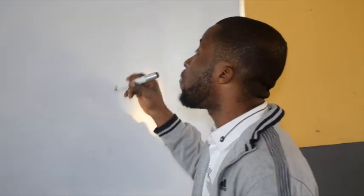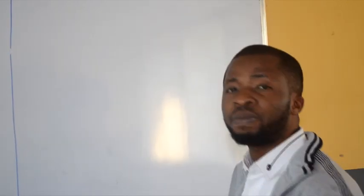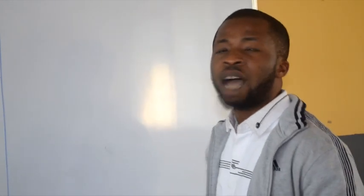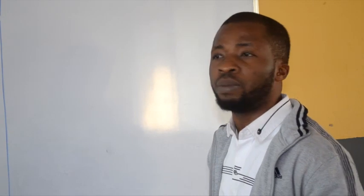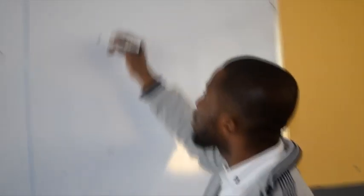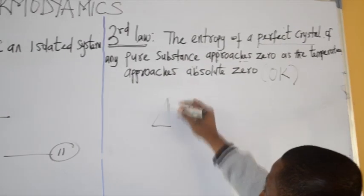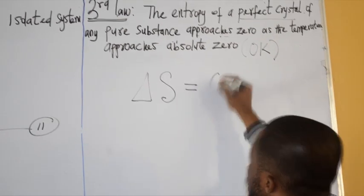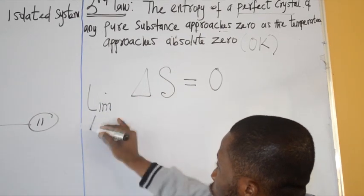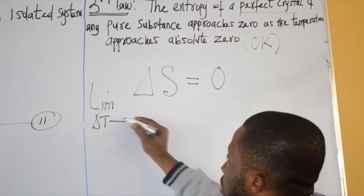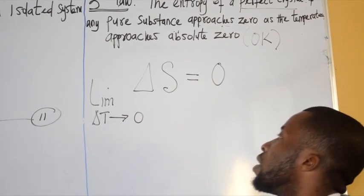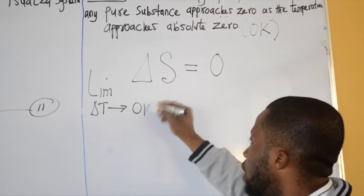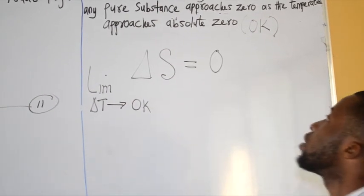So in other words, I can also define the third law by saying that absolute zero temperature is unachievable or is impossible. It simply means that the entropy of a crystal equals zero if the temperature becomes zero Kelvin, that is absolute temperature.